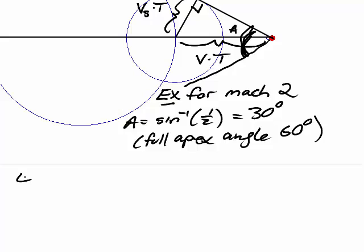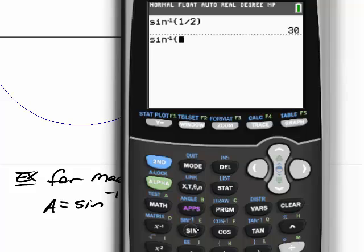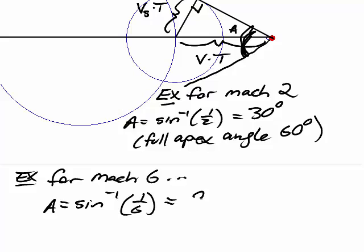Let's go ahead and do another example at a higher speed so that we can see that, in fact, the angle is less. So for Mach 6, which was the highest speed in the simulations that I showed you earlier, a is the arc sine, the inverse sine of 1 over 6, which gives us about 9.6 degrees, which again is half the full apex angle, so we're going to call it roughly 19 degrees for the full angle at the apex of the shock.